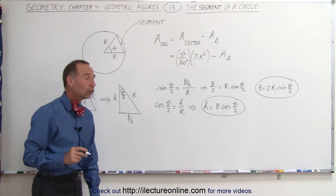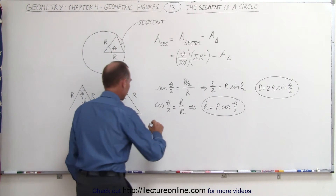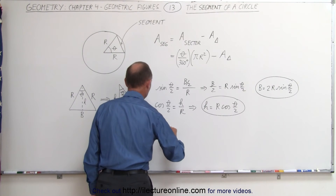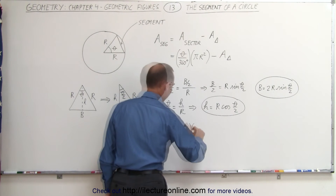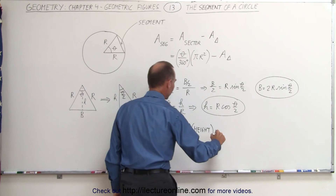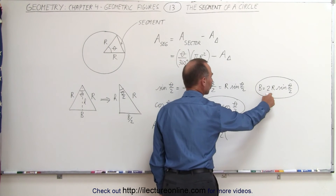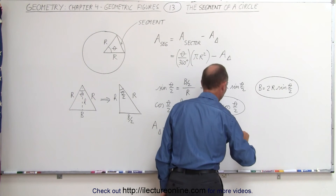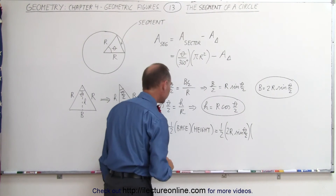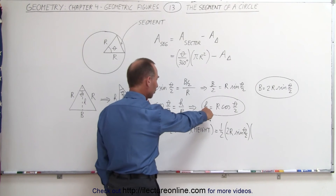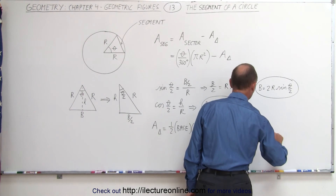Now that we have those two relationships, we can define the area of the triangle. The area of the triangle equals one half times base times height, which is one half times 2r times sine of (theta/2), times r times cosine of (theta/2).